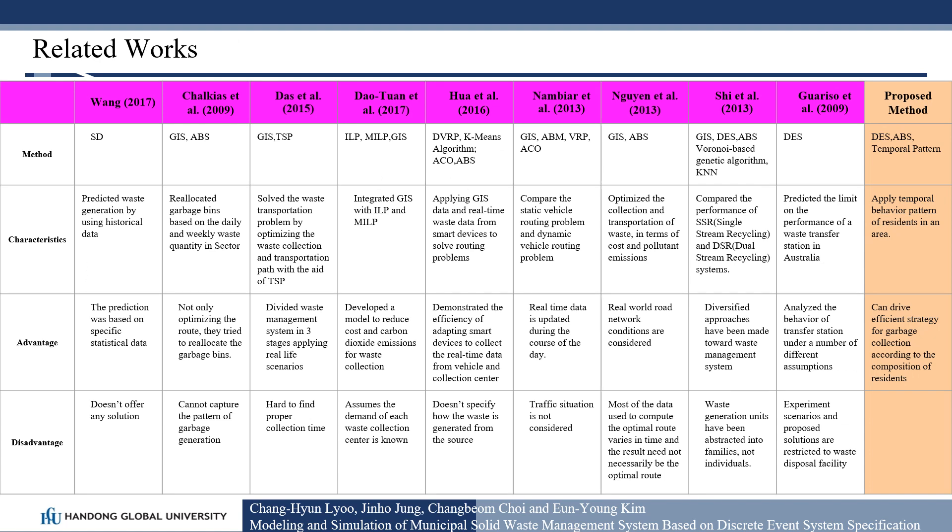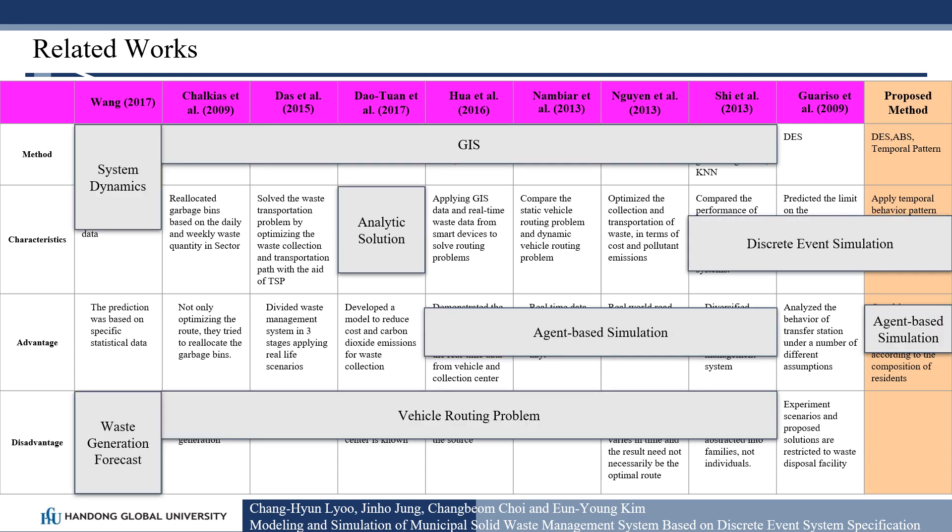These are the related works for optimizing waste management system. Many researchers proposed GIS and solving vehicle routing problem to optimize the waste collection and transportation. Some of them used agent-based simulation to solve the problem. Especially Shi et al. and Guariso et al. used discrete event simulation. Some other researchers used system dynamics to forecast the waste generation. However, to the best of my knowledge, there has been little discussion of the modeling of human behavior patterns or cultural characteristics in the context of waste management.